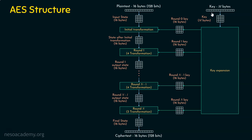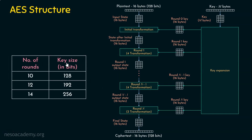Let's demystify the relationship between the number of rounds and the key size. If the key size is 128 bits (16 bytes), then the number of rounds is 10: rounds 1 through 9 with 4 transformations, and round 10 with 3 transformations. If the key size is 192 bits (24 bytes), the number of rounds is 12: rounds 1 through 11 with 4 transformations, and round 12 with 3 transformations. If the key size is 256 bits (32 bytes), it takes 14 rounds: rounds 1 through 13 with 4 transformations, and round 14 with 3 transformations.